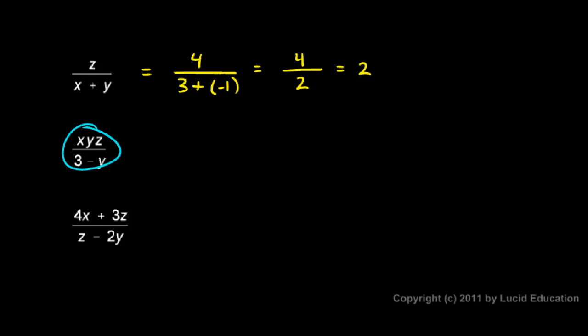In the next example, I have xyz over 3 minus y. So as before, I rewrite it, but instead of x, I put in 3, instead of y, I put in negative 1, and instead of z, I put in 4. Notice all three of those things are multiplied together, and in this case, I indicated that with parentheses. In the denominator, I have 3 minus y, so I'll write 3 minus negative 1.